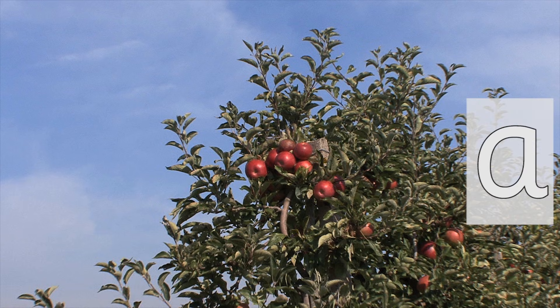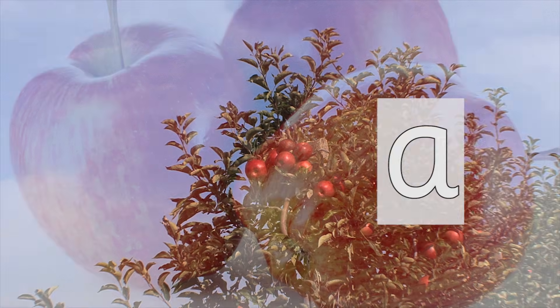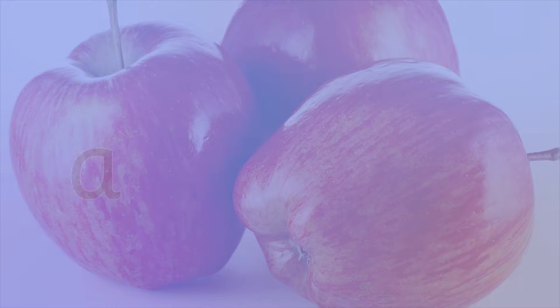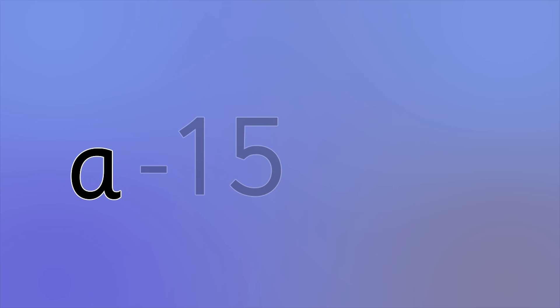Let's use the letter a to represent the number of apples on the branch. This is how we would write the equation: We started with an unknown number of apples, that's a. Then we took away 15, and we're left with 8.